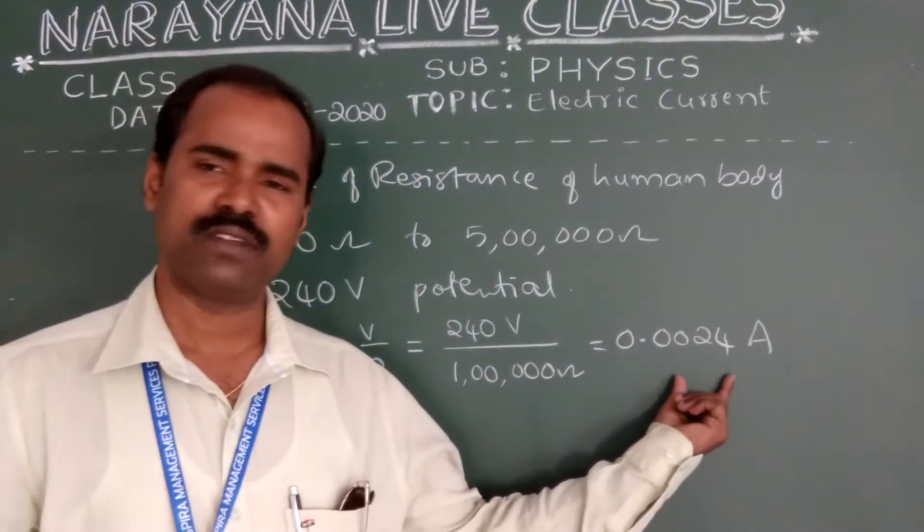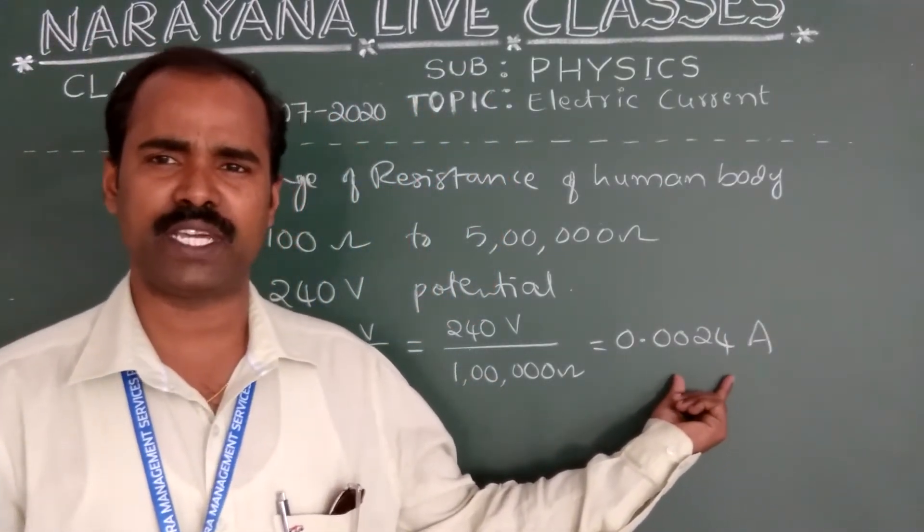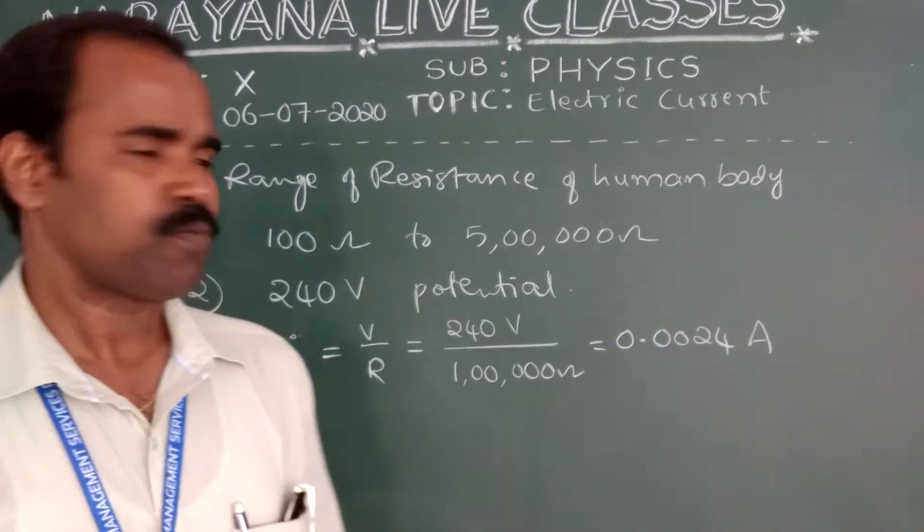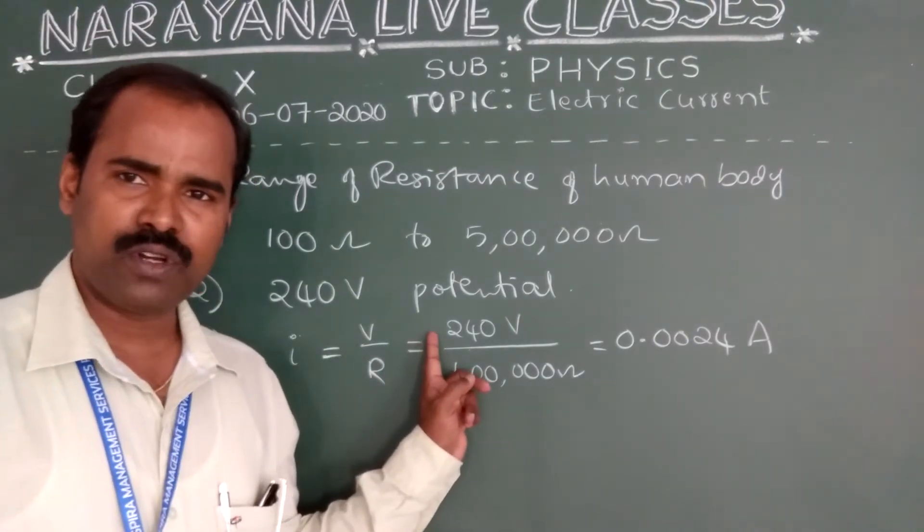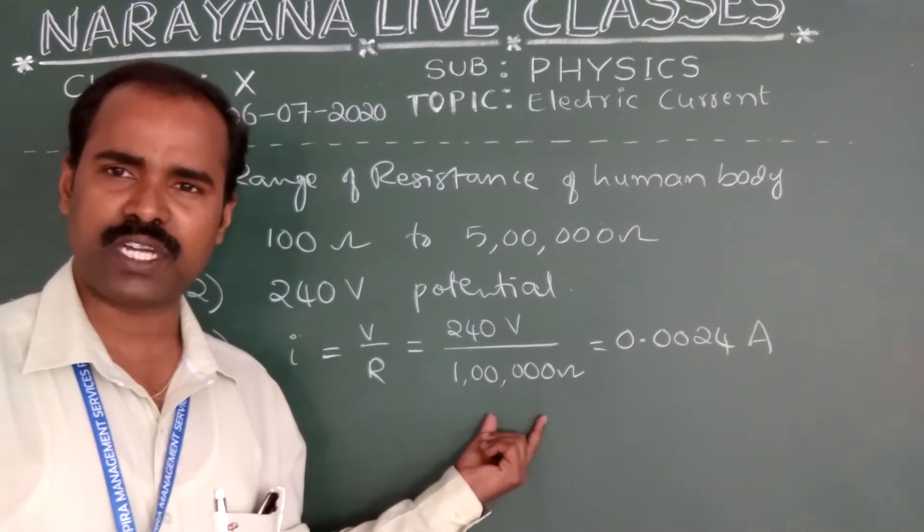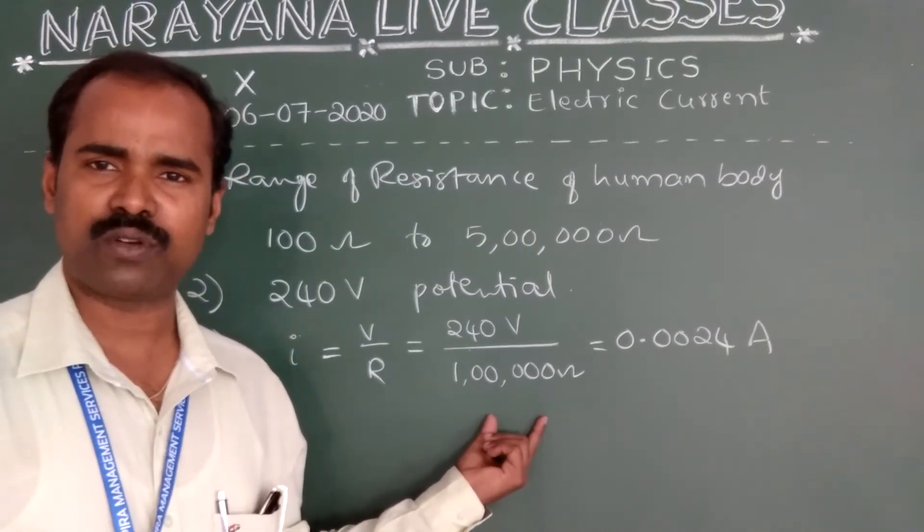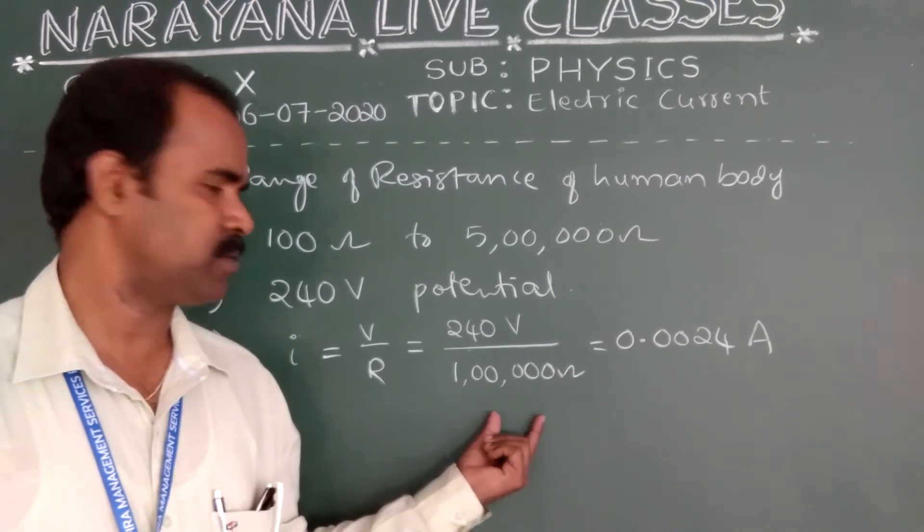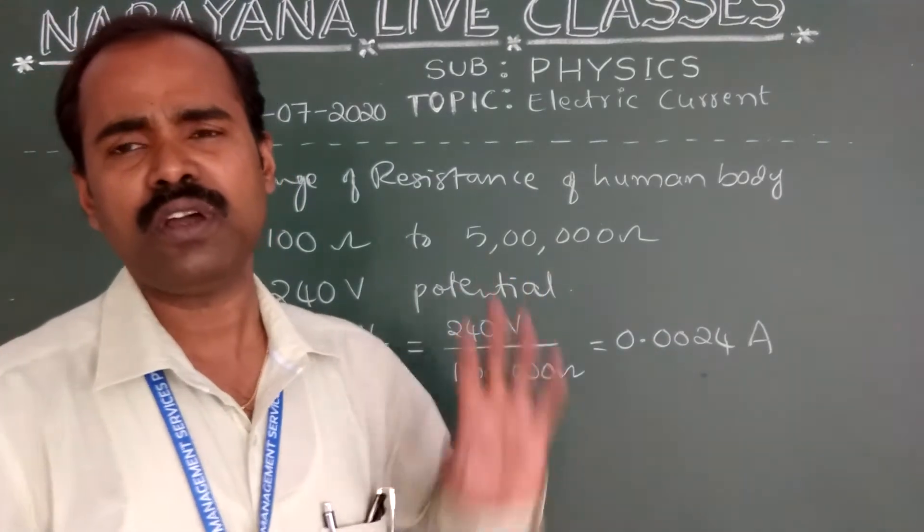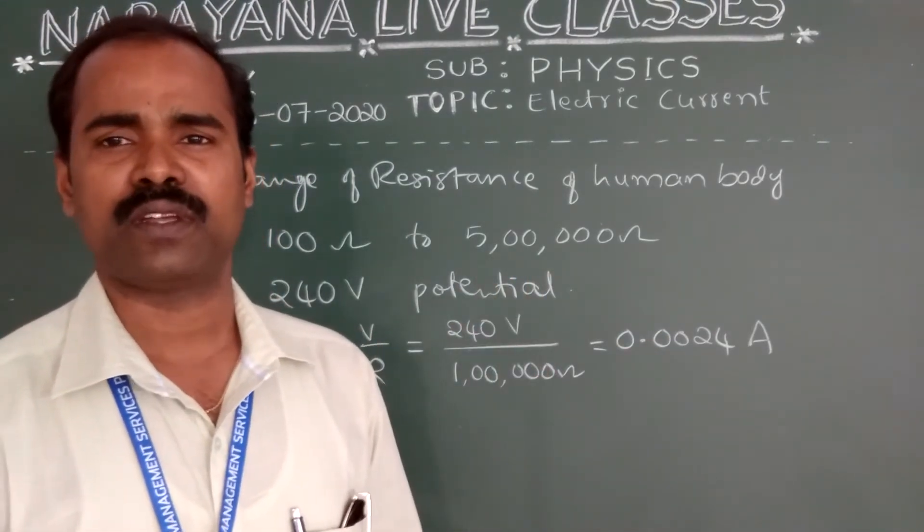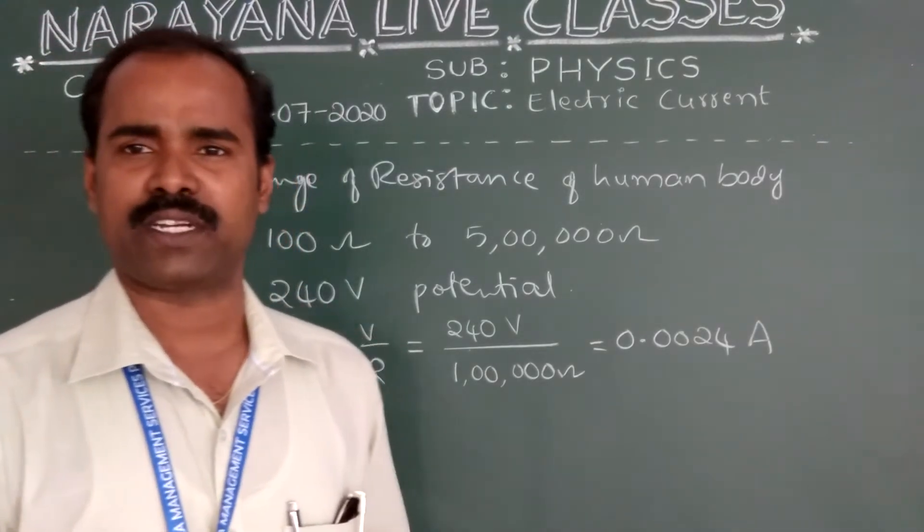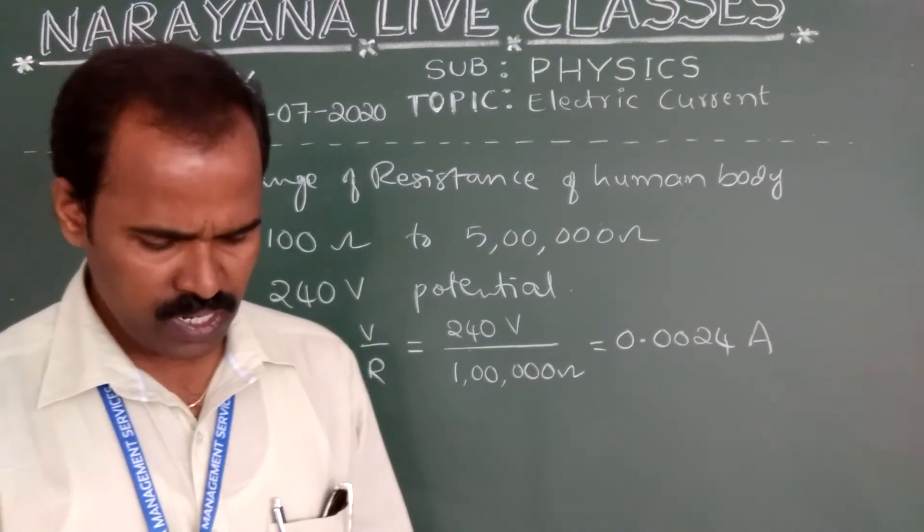So this is the amount of current. This is a very small quantity. Even though, we can get shock. That's why, 240 volts of live wire if you touch with our hands, then the resistance offered by our body is about average resistance 100,000 ohms. The current passing through our body is 0.0024 ampere. With that, we will get shock and all the muscles may contract.